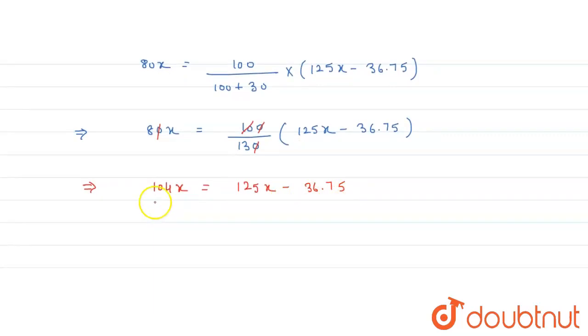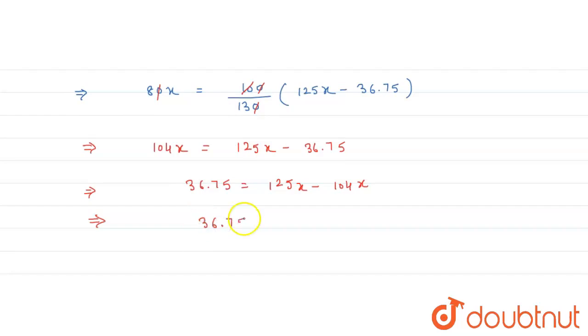Now take 36.75 to the left-hand side and 104x to the right-hand side. So 36.75 is equal to 125x minus 104x. Now simplify: 36.75 is equal to 21x. Now find out the value of x.